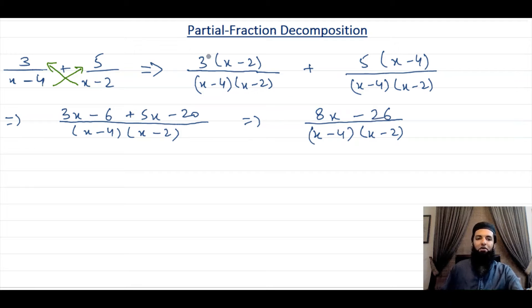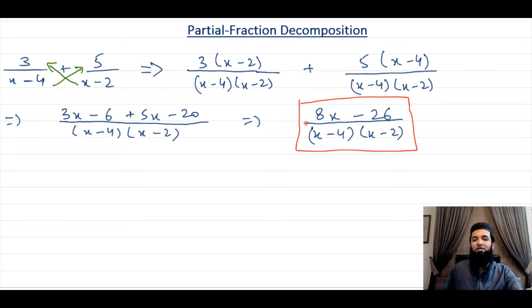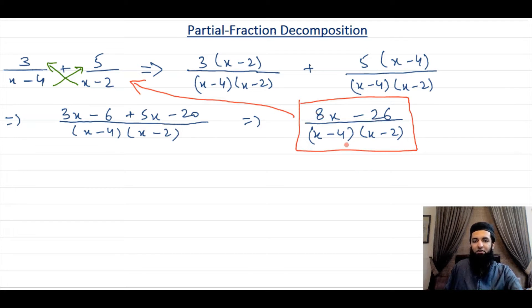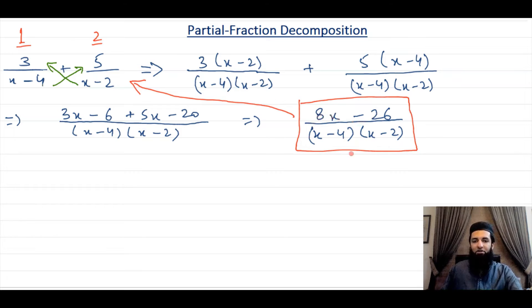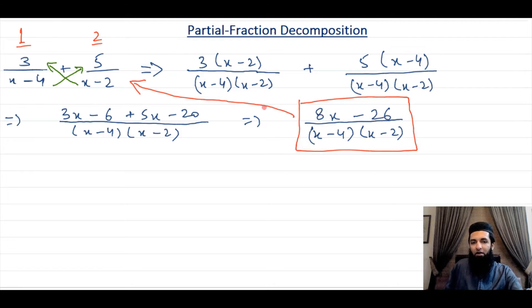This is very straightforward — all of you know how to do this. Now the question is, what if you have this single fraction given and you instead have to go in the opposite direction? You want to find the parts that make up this fraction. This is the first part and this is the second part. When we add these two parts up, we get this single fraction. That's why these two fractions are known as the partial fractions of this. We need to find a way to go in the opposite direction — that's what we're going to learn in this video.